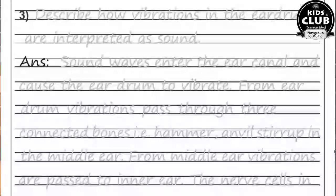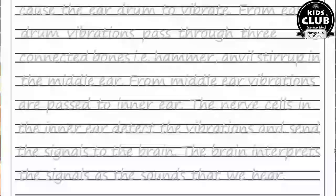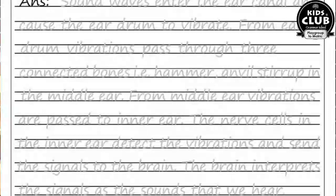Question number three: Describe how vibrations in the ear drum are interpreted as sound. Sound waves enter the ear canal and cause the ear drum to vibrate. From the ear drum, vibrations pass through three connected bones — hammer, anvil, and stirrup — in the middle ear. The nerve cells in the inner ear detect the vibrations and send signals to the brain. The brain interprets the signals as the sound that we hear.